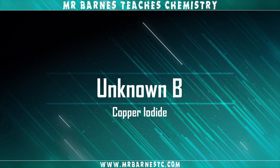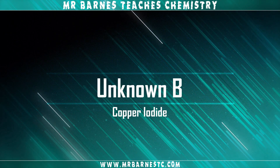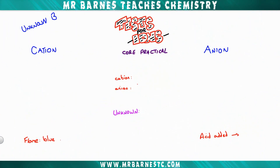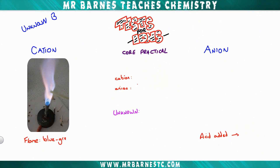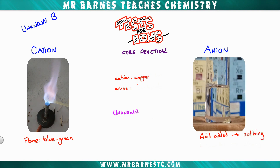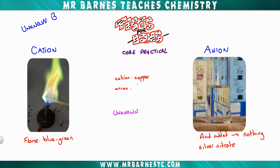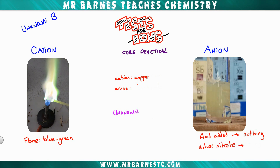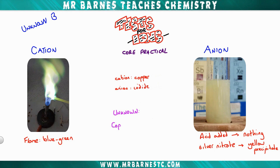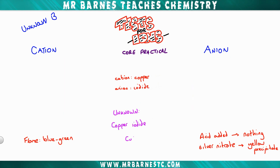Unknown B: copper iodide. Again we do our flame test — it should go blue or bluey green. For the anion, we add an acid and should see nothing happening, then we add silver nitrate. If we get a yellow precipitate we know we have an iodide. Therefore we know that the unknown is copper iodide.